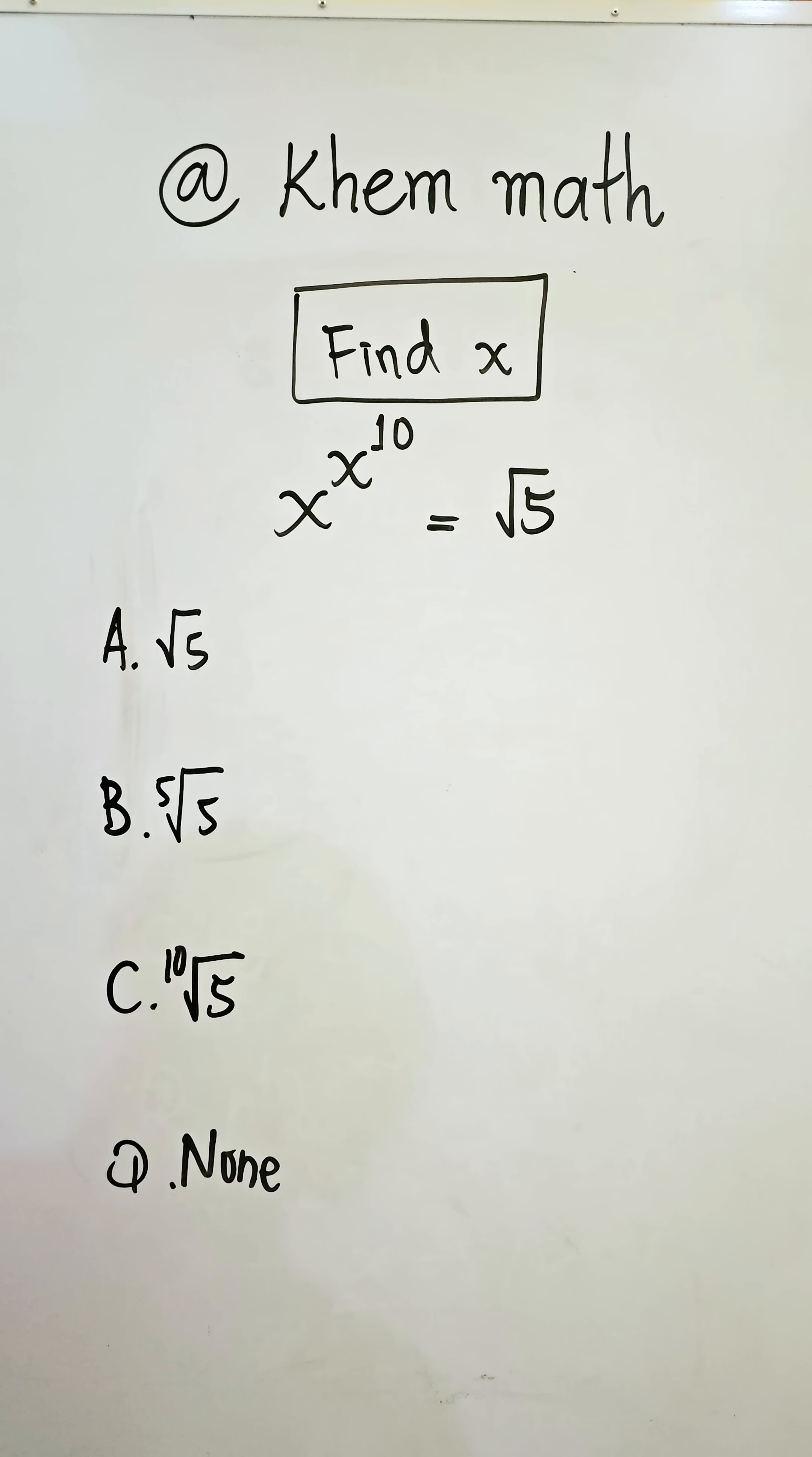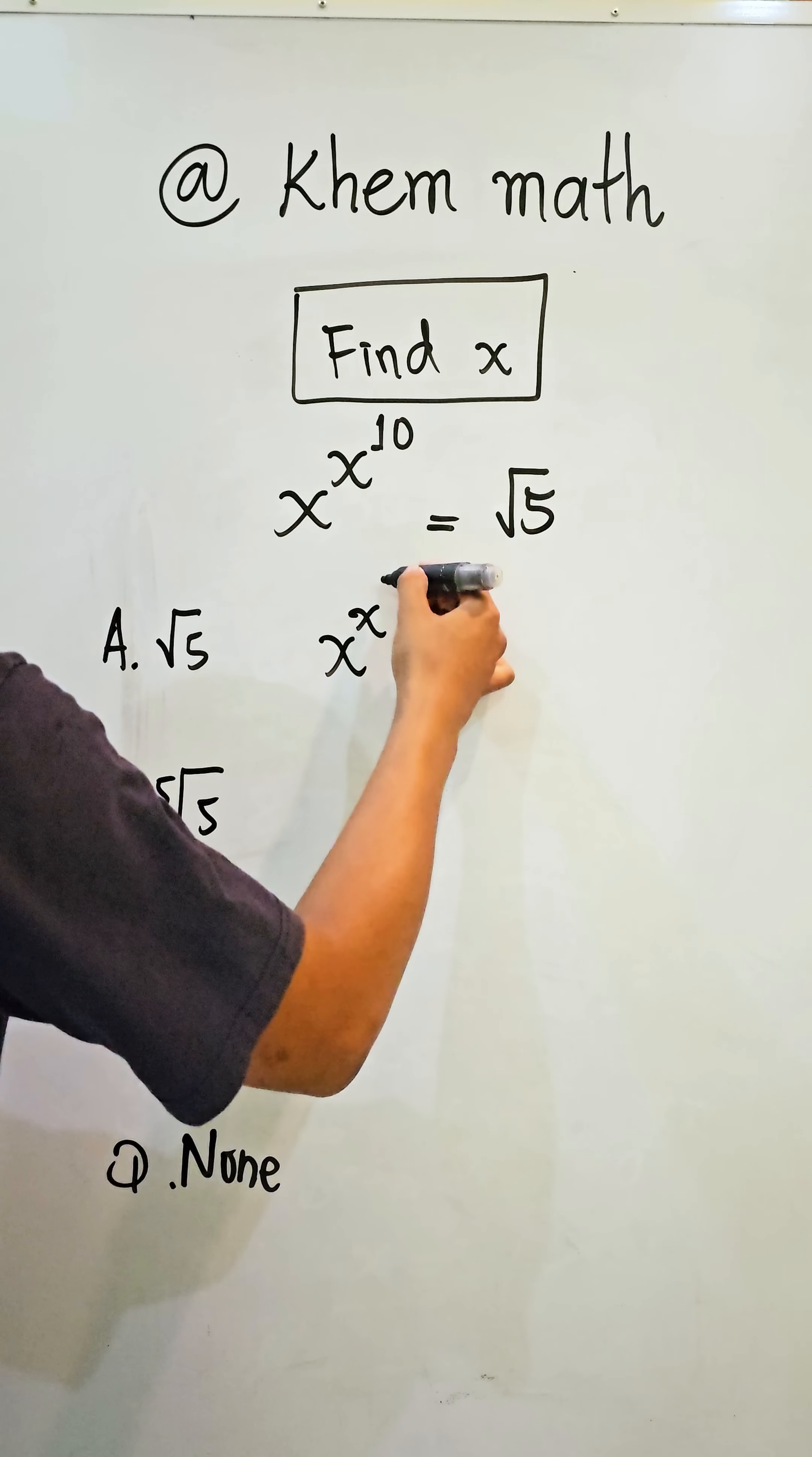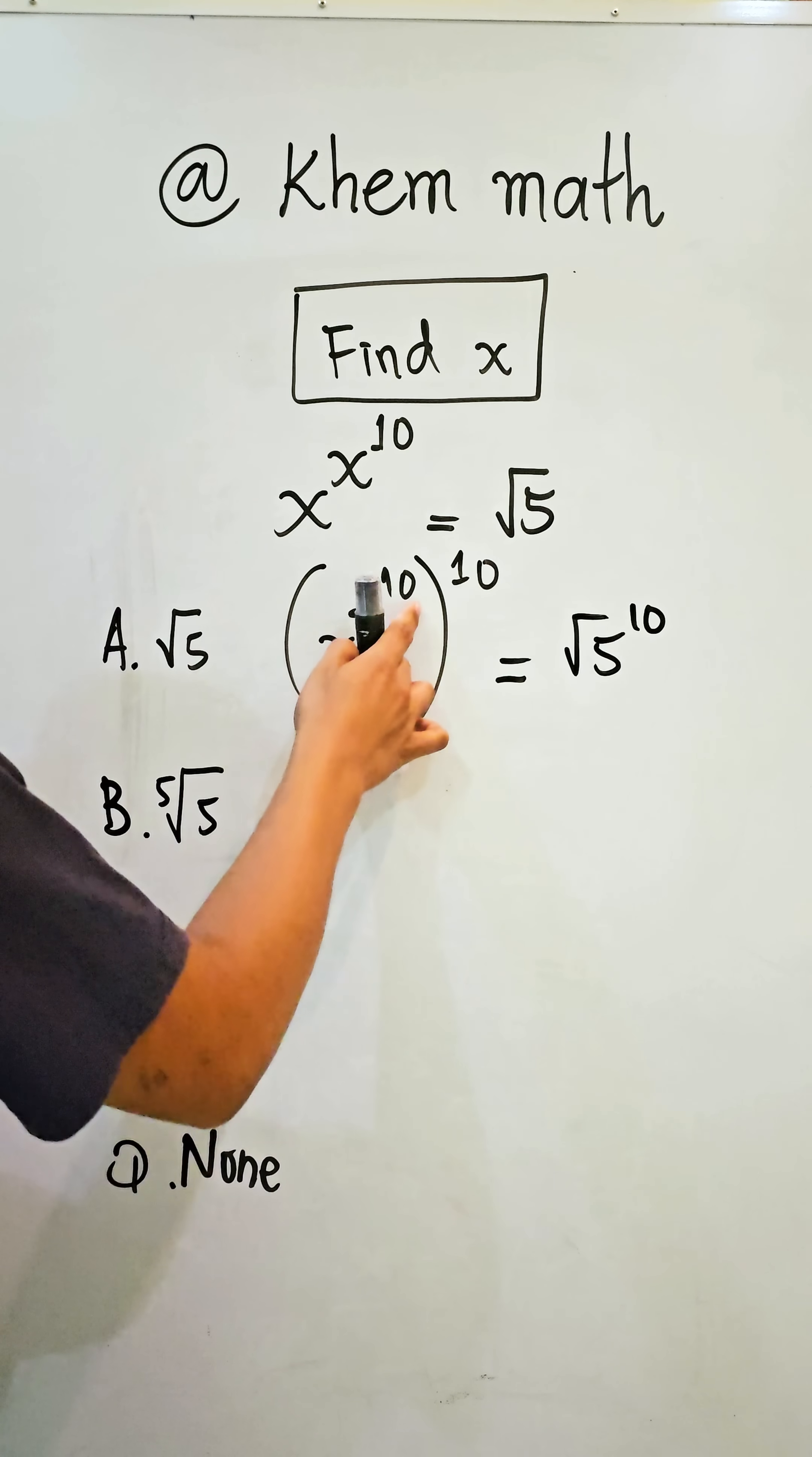Okay, now look at the equation. The first step, I will raise this equation to the power of 10. So we get x to the power of x to the power of 10, all raised to the power of 10, equals square root 5 to the power of 10.